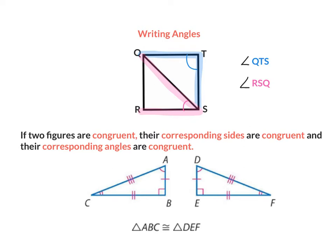If two figures are congruent, their corresponding sides are congruent and their corresponding angles are congruent. So if we're talking about side AB and side DE, they are congruent because they both have one dash. Side CA and side FD are congruent because they have three dashes. Angle A and angle D are congruent because they both have one arc, and angle C and angle F are congruent because they have two arcs. This symbol here means congruent — that's the geometry symbol for equals.